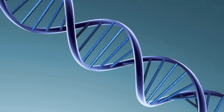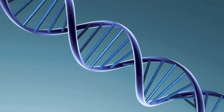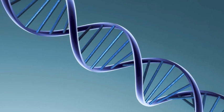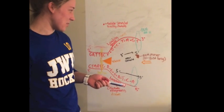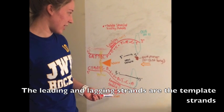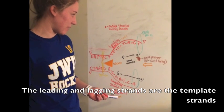DNA replication is the process of producing two identical replicas of DNA from one original DNA molecule. So there's a leading and a lagging strand during DNA replication.